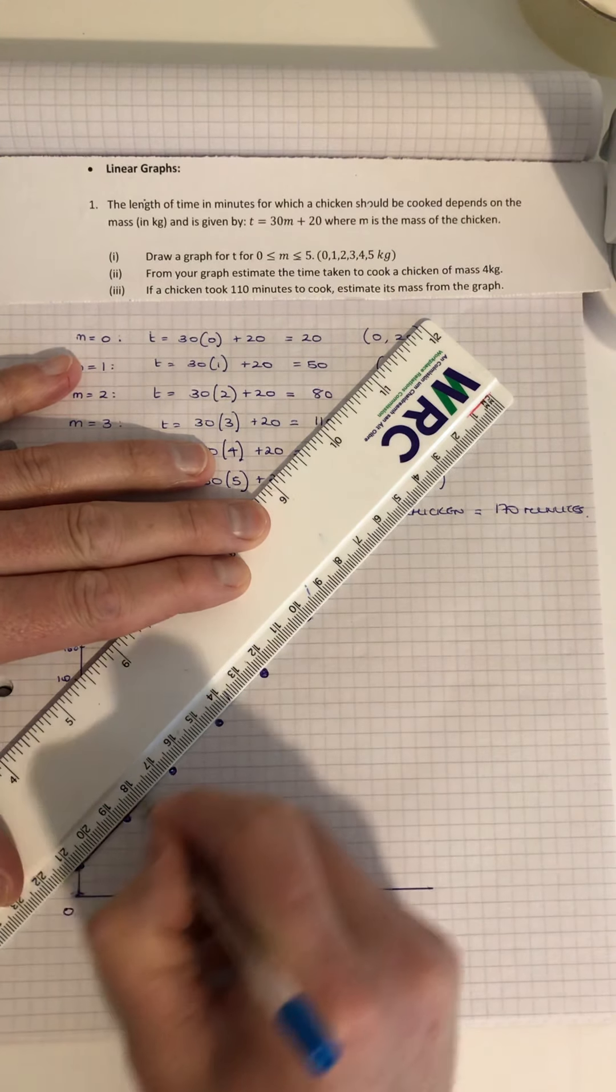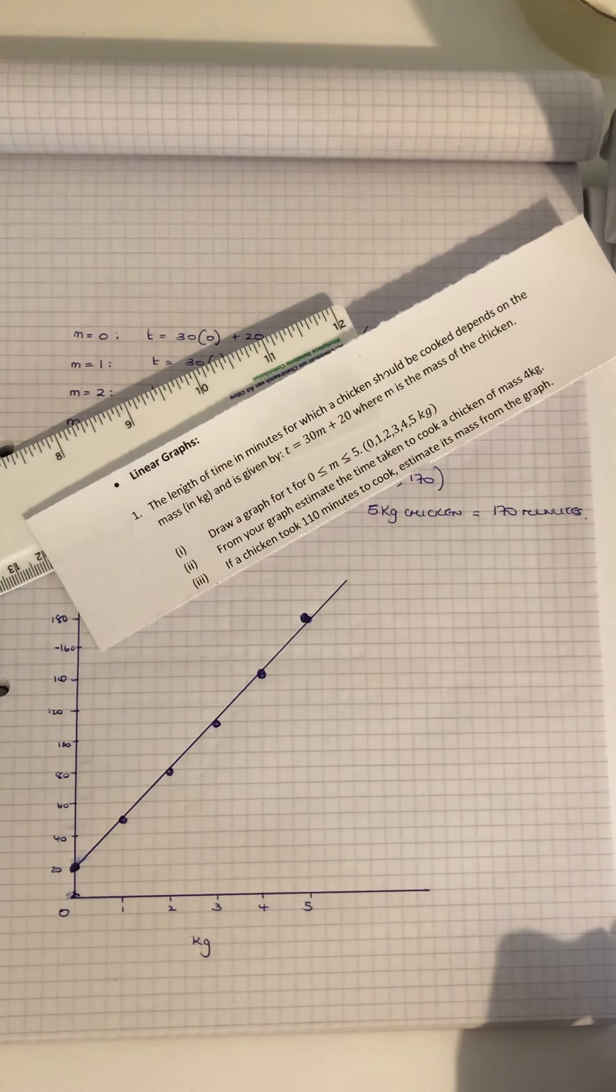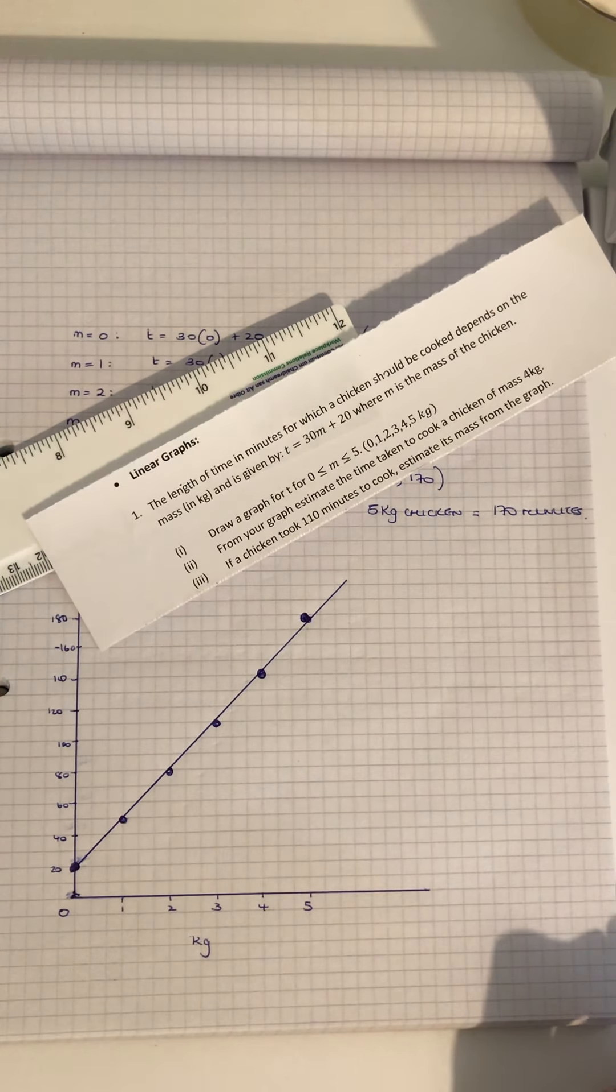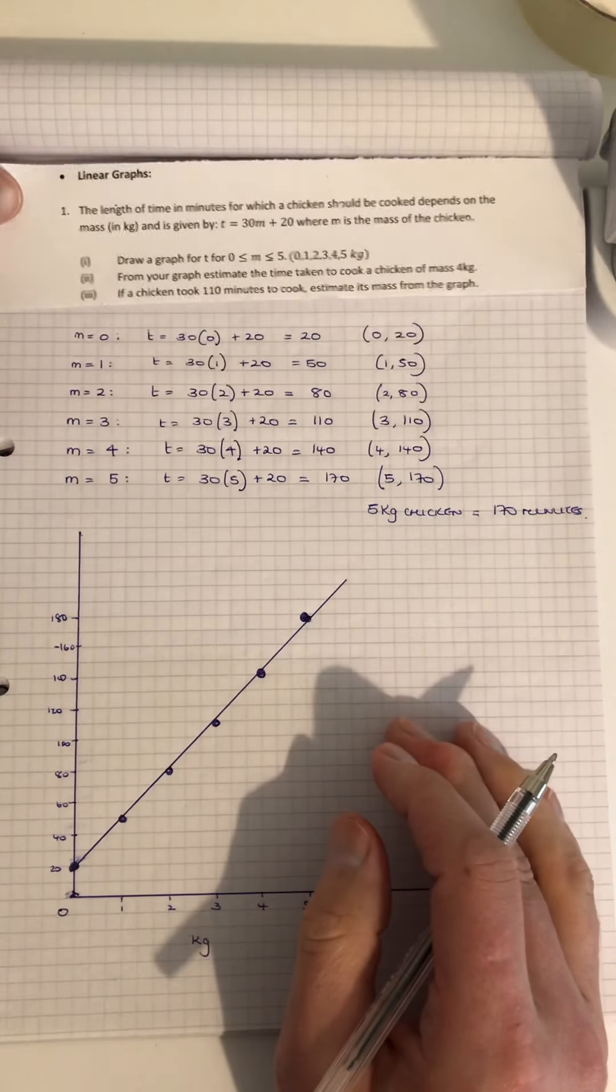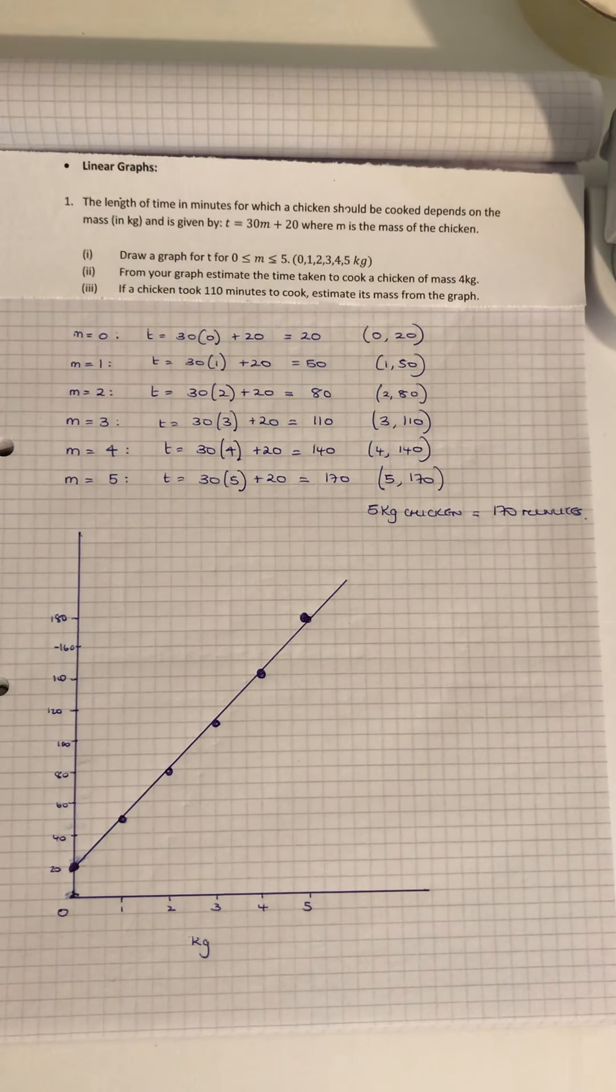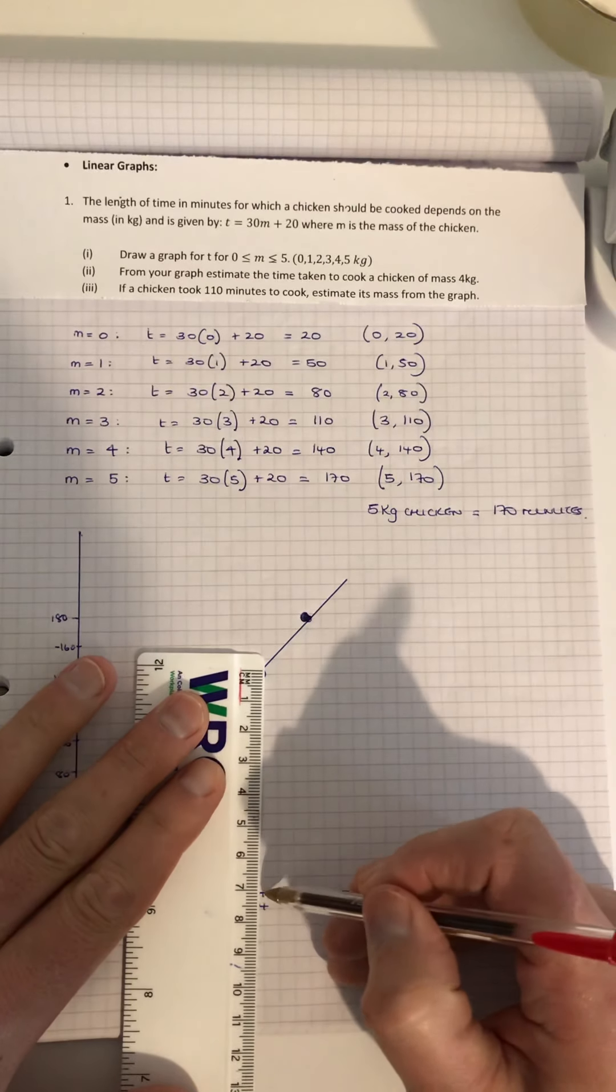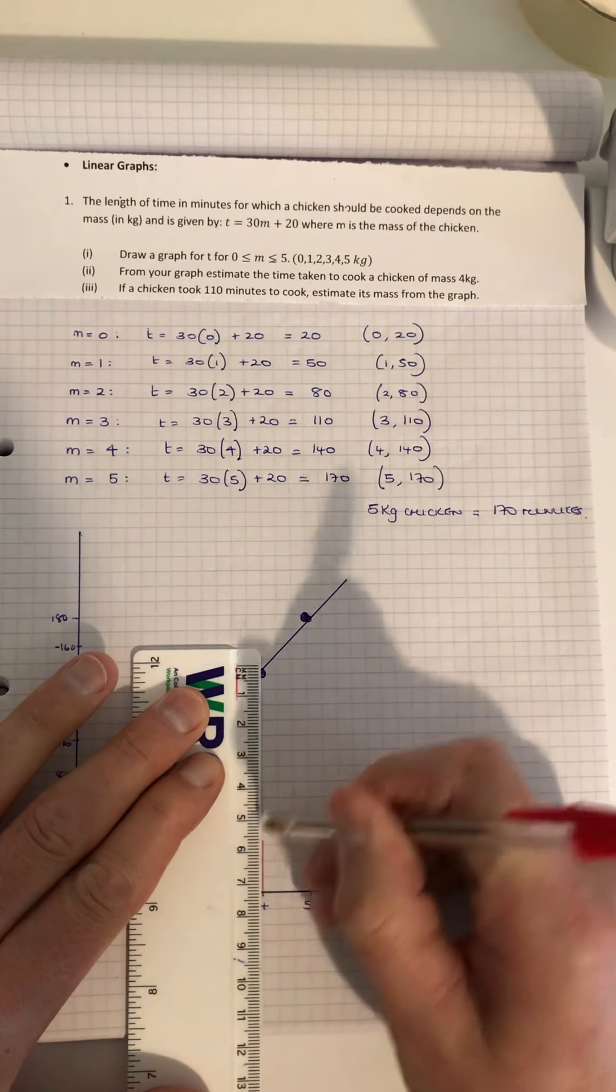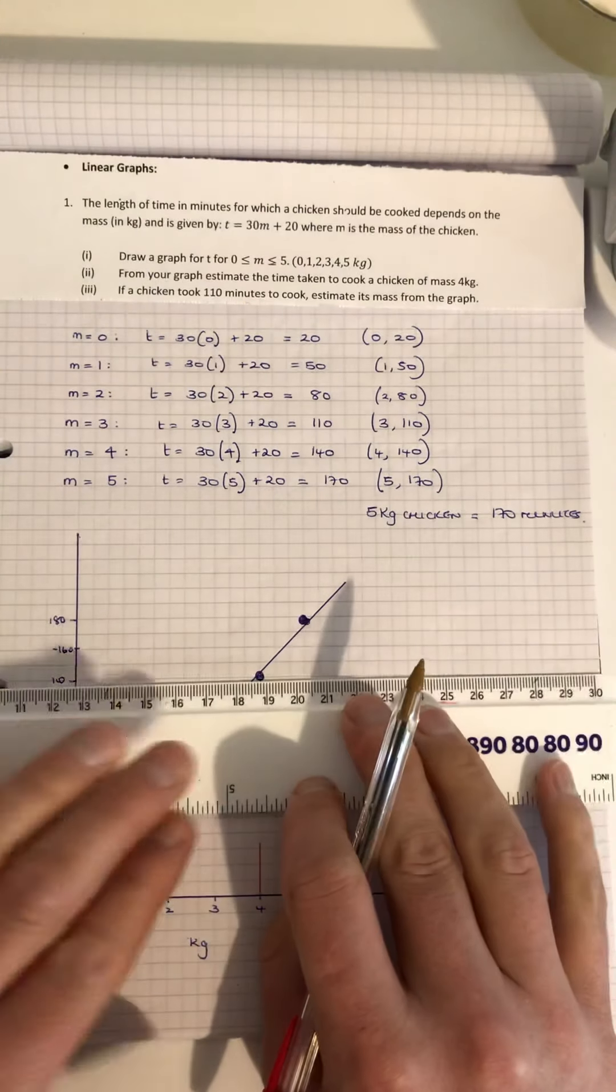Now, from your graph, estimate the time taken to cook a chicken of 4 kg. So roughly how long would it take to cook a chicken of 4 kg? Let's see how long it takes.